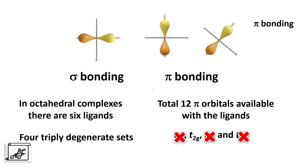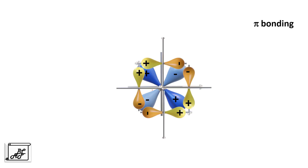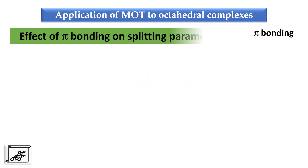These t2g orbitals of the ligand overlap with the central metal orbitals to form pi bonds. The main effect of pi bonding is that metal complexes gain extra stability due to the formation of a pi bond in addition to the sigma bond. Pi bonding also affects the splitting parameter delta O. Let's see the effect of pi bonding on the splitting parameter delta O.